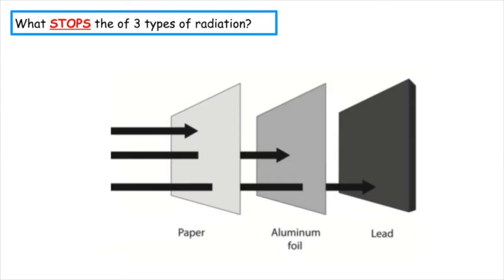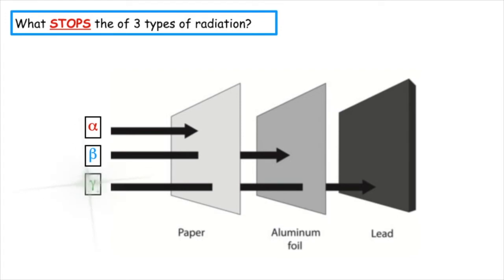We have to know what is able to stop each type of radiation. Alpha can only travel a few centimetres, so it can be stopped by either a few centimetres of air or a piece of paper. Beta can travel a few metres and can be stopped by some aluminium foil or a sheet of aluminium. Gamma can travel the furthest and can only be stopped by a block of concrete or lead.